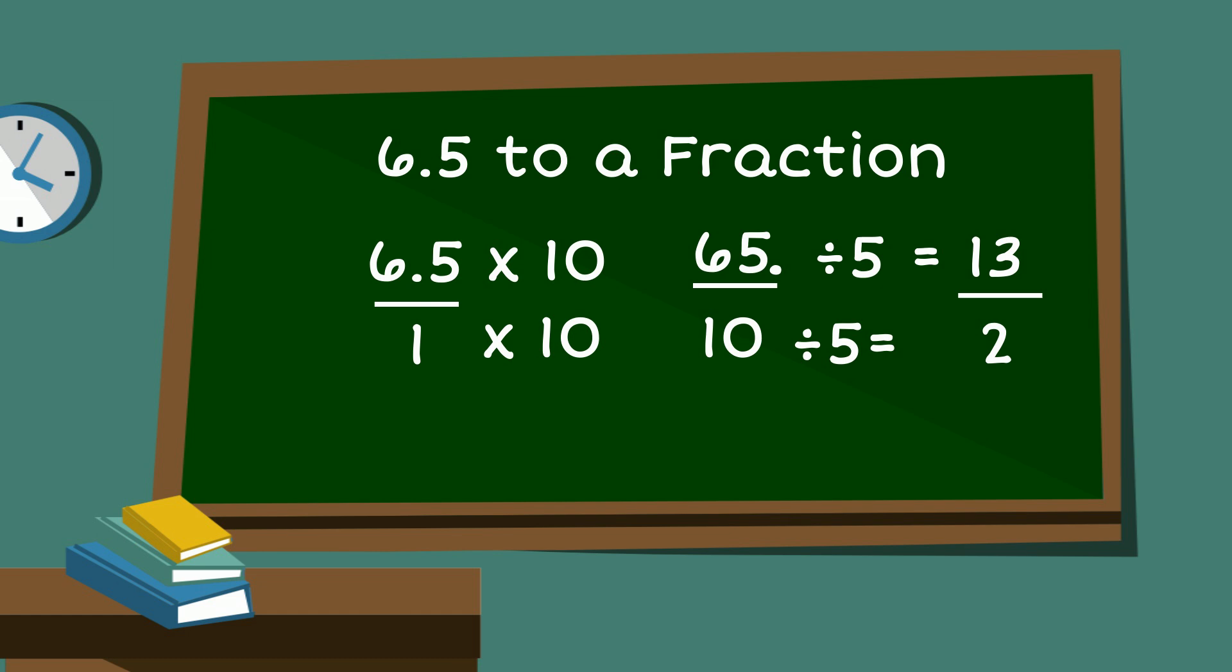Now if you would like, we can convert it into a mixed number. And so 2 goes into 13 6 times. 6 times 2 is 12. 13 minus 12 is 1. So we'll place the 1 over 2. That gives us 6 and a half.